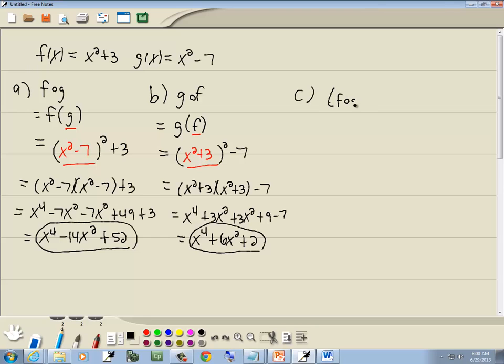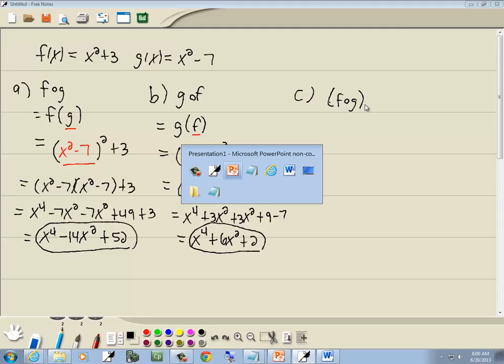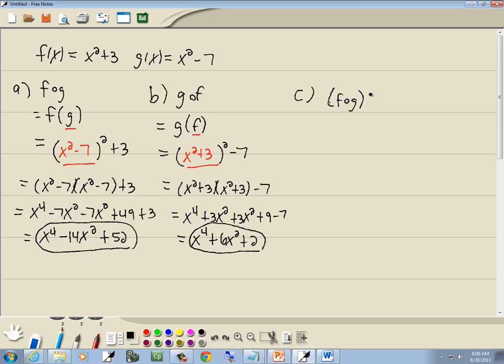Now c. We want to find the composition of f and g and then evaluate x for 3. So this is a continuation of part a. We're going to take x to the fourth minus 14x squared plus 52 and plug 3 in for x. So we've got 3 to the fourth minus 14 times 3 squared plus 52. It gives us 81 minus 14 times 9 plus 52.